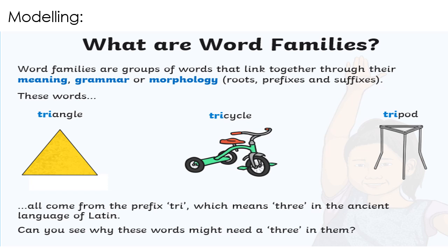You can see three pictures given here: triangle, tricycle, tripod. All come from the prefix 'tri-', which means three in the ancient language of Latin. Can you see why these words might need a 'three' in them? All three pictures have 'three' in them.